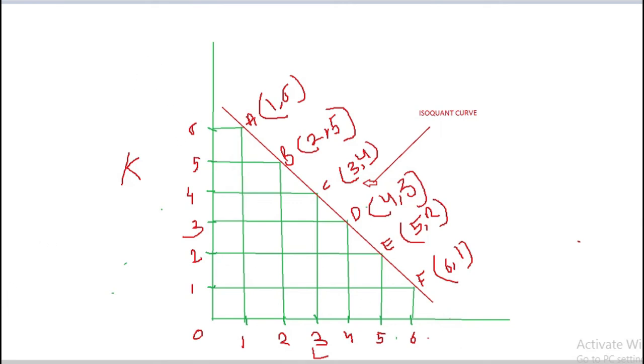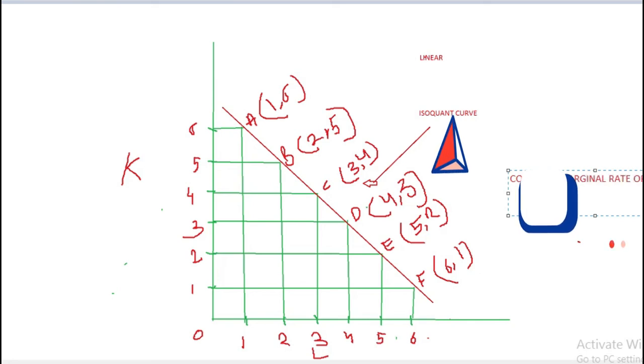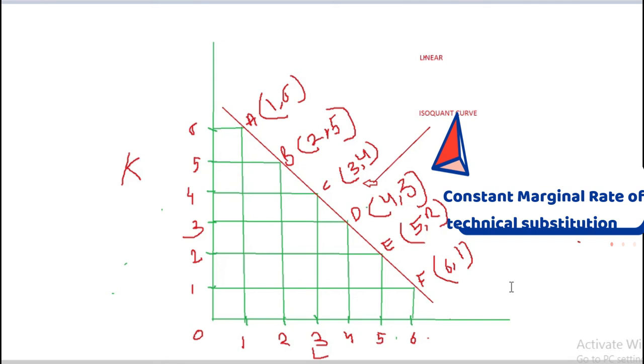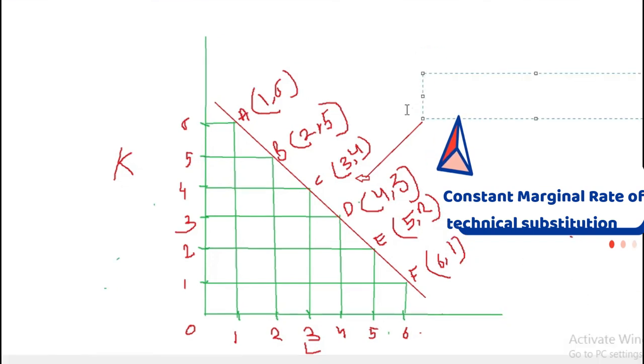You have a constant marginal rate of technical substitution. You can see that to increase one unit of labor, one unit of capital is forgone, and the production level will be the same all over the curve.